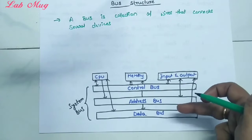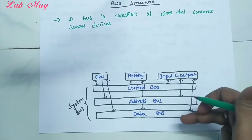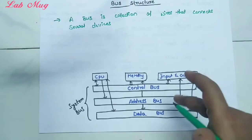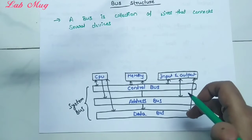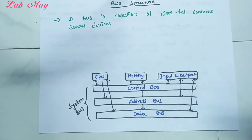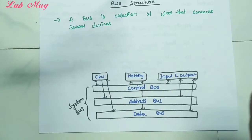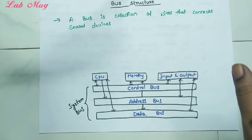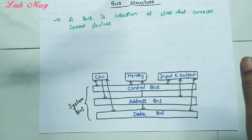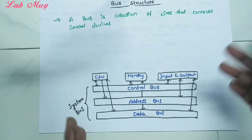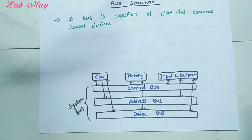Here we use three buses: control bus, address bus, and data bus. The control bus does its cooperation, the address bus does its cooperation, and the data bus does its cooperation. In bus structure, the main three buses are control bus, address bus, and data bus.